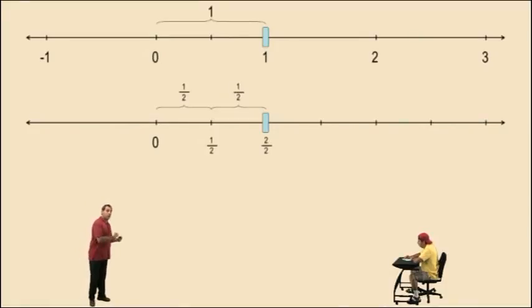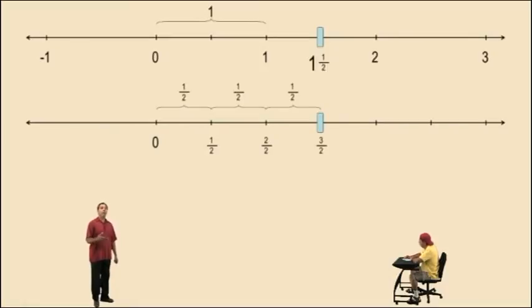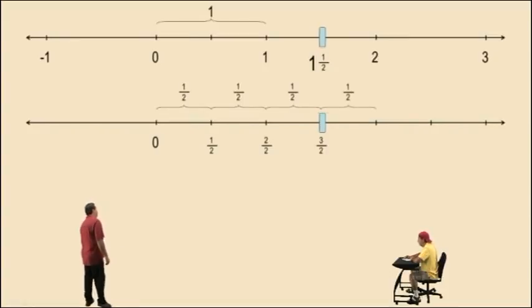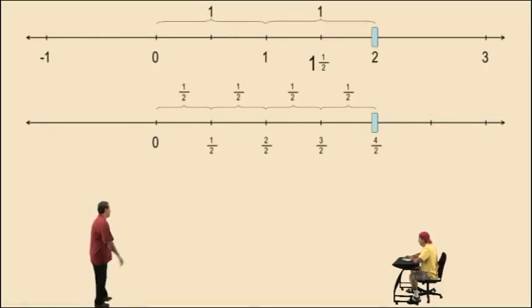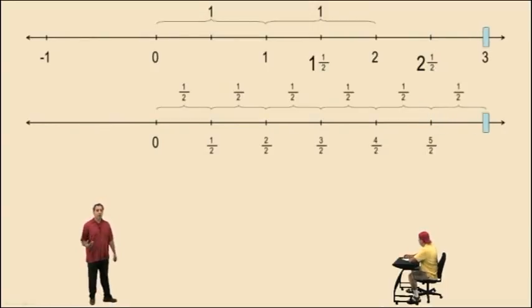Let's continue on to some more improper fractions. Let's add another half, and that gives us 3 halves. And that's equivalent to the mixed number 1 and 1 half. Now, notice we are using the word and — we say 1 and 1 half. Why do we call these mixed numbers? Because they're mixed with a whole number part and a fractional part. Now, let's add another half. That gives us 4 halves, and 4 divided by 2 is 2, so 4 halves is equivalent to 2 wholes. If we add another half, that gives us 5 halves, and that's 2 and 1 half. Add one more half, and that gives us 6 halves, which is equivalent to 3.